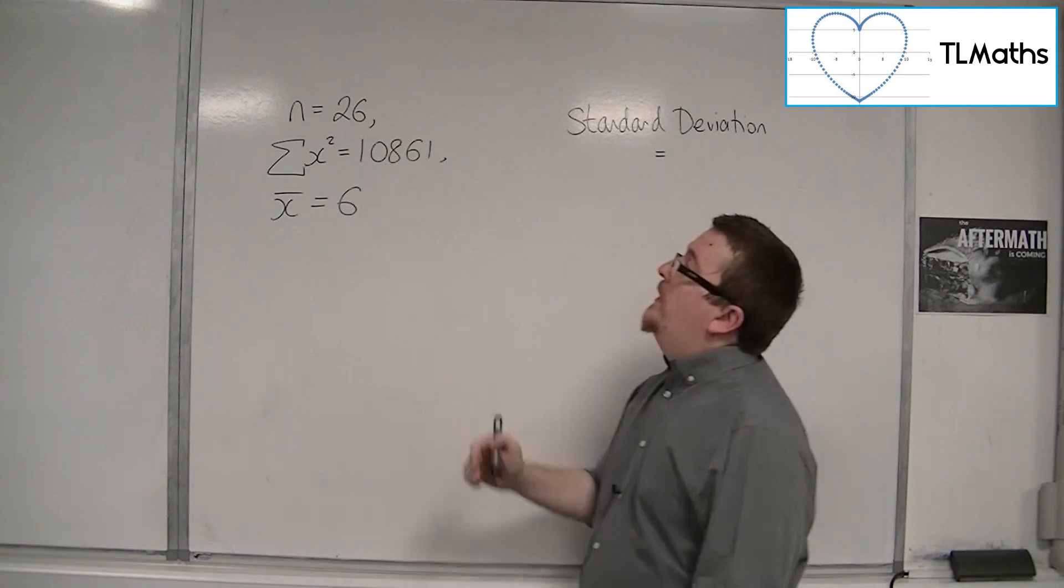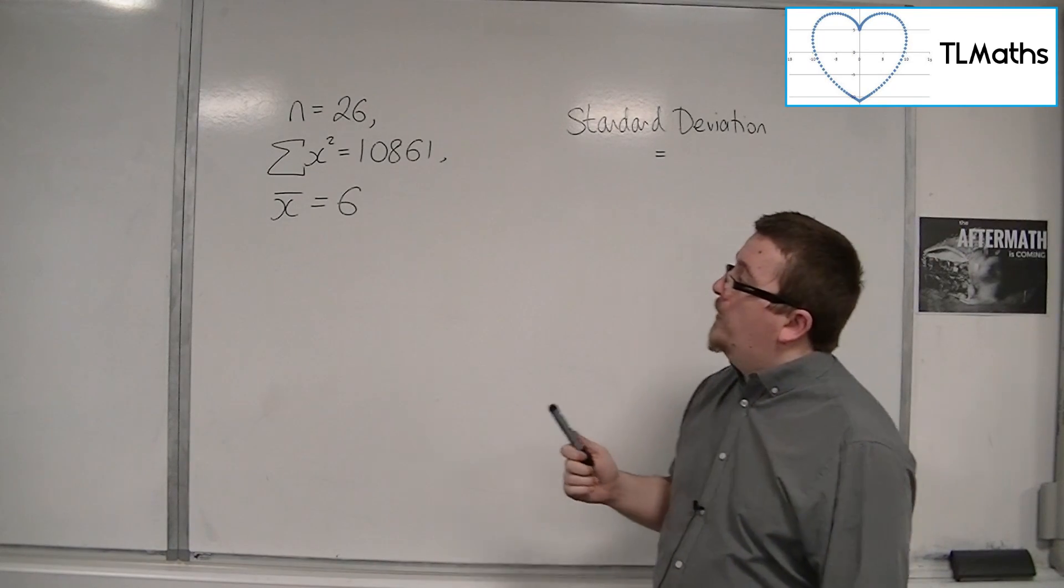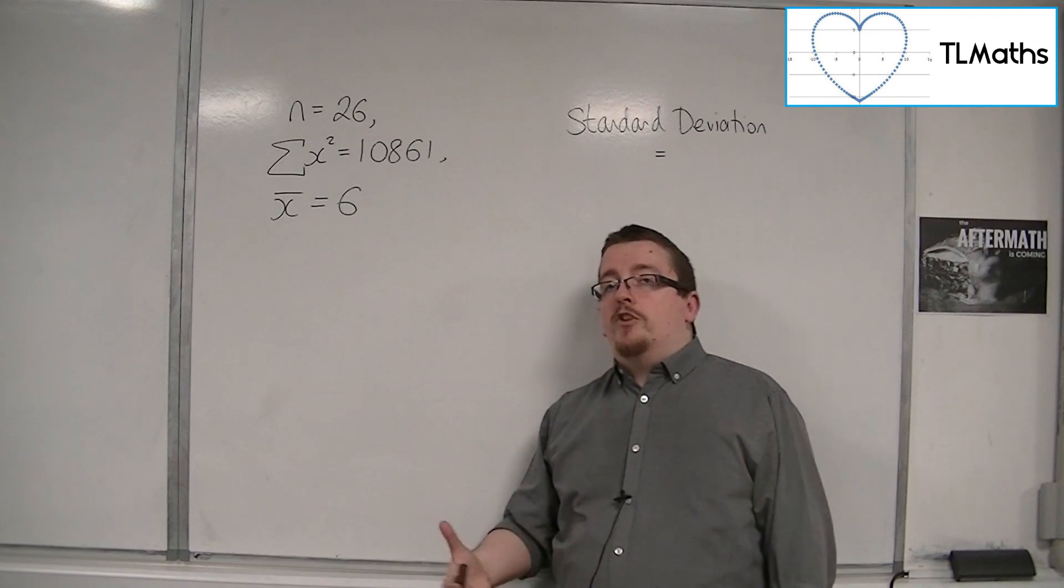I'm given that n = 26, there's 26 data items, the sum of the x squareds is 10861, and the mean is 6.